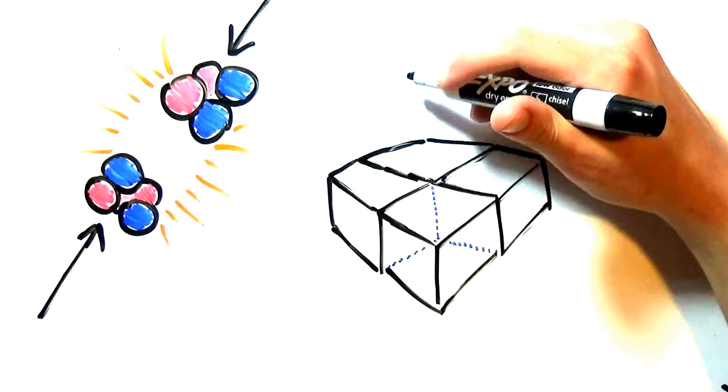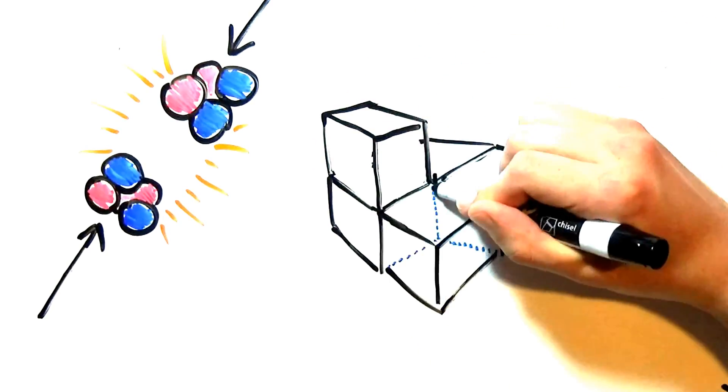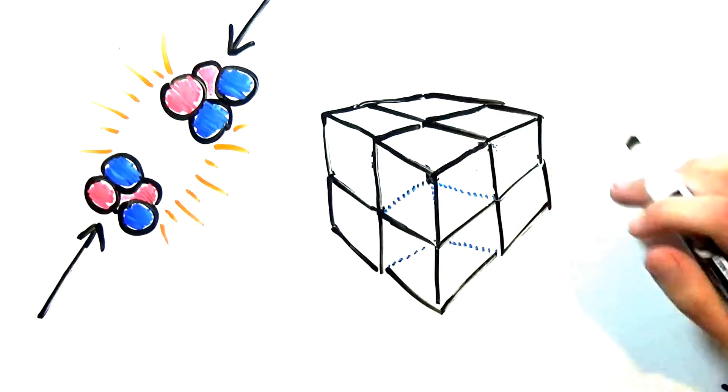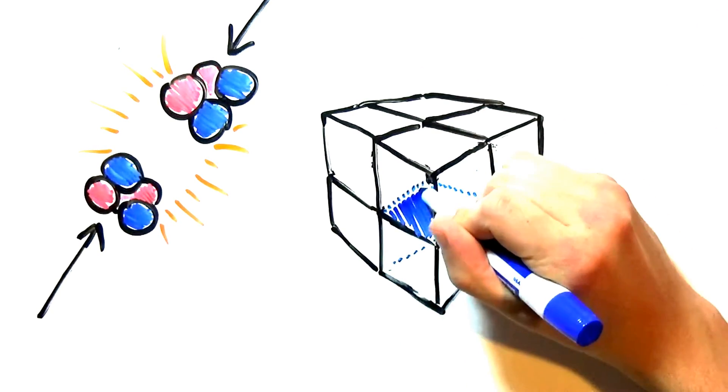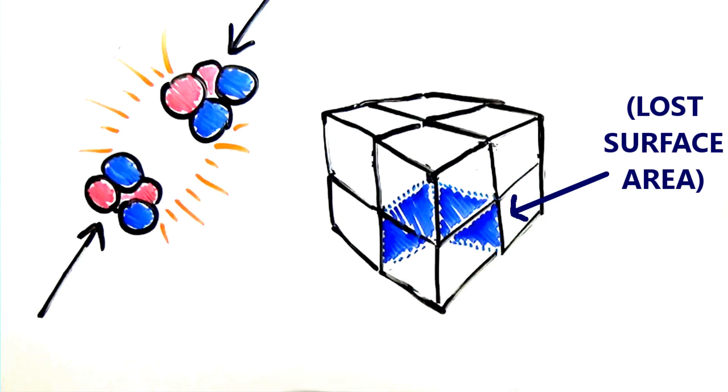To visualize this, take a cube, record its surface area and volume, and then combine seven more cubes to create a larger one. The surface area of some areas of the smaller cube now are engulfed and lost.